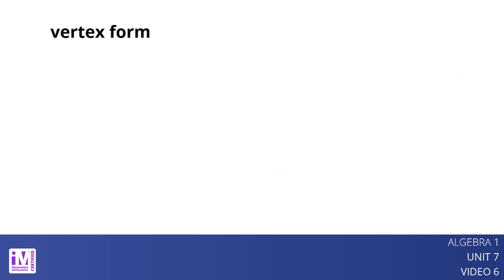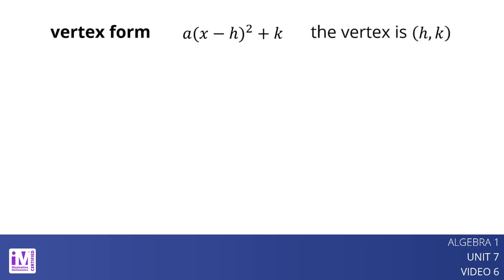A function expressed in vertex form is written as a times the quantity x minus h squared plus k. The vertex of the function is (h, k).